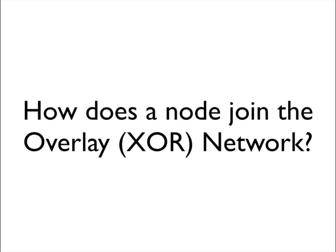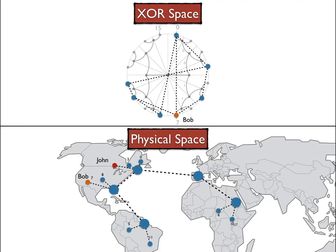Let's now see how a node joins the network. John is connected to the internet in the physical space and he knows of another machine called Bob, who is both connected to the internet in the physical space and part of the overlay network in XOR space. The information John needs to connect to Bob and eventually join the overlay network is the IP connection information for Bob and its encryption key.